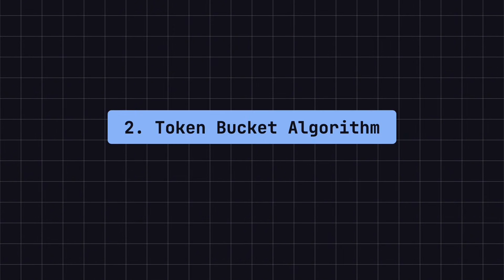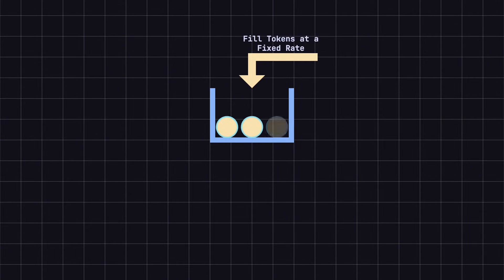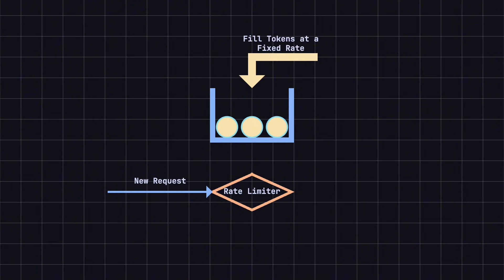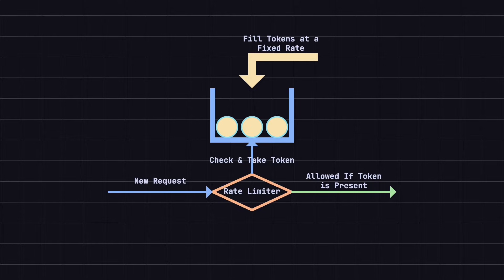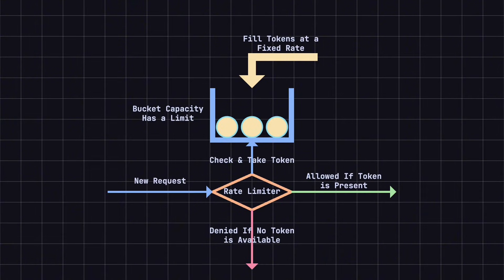The second rate-limiting algorithm is the token bucket algorithm. Unlike the leaky bucket algorithm, the token bucket algorithm allows the system to handle more requests than the fixed rate for short periods, making it better suited for dealing with burst traffic. Tokens are added to a bucket at a fixed rate. When a user makes a request, the system checks if there is a token available in the bucket. If there is, the system takes a token and processes the request. If no token is available, the system may either discard the request or delay its processing. The bucket has a limited capacity, so when it reaches the maximum number of tokens, the system pauses adding new tokens until some are used.